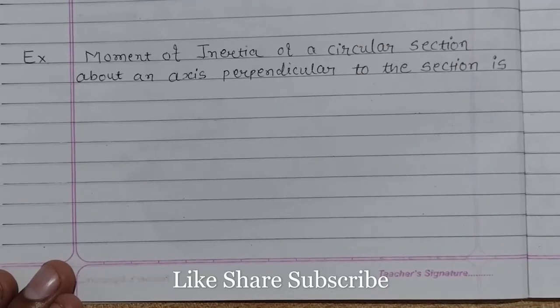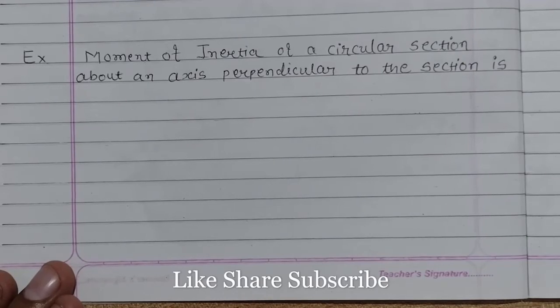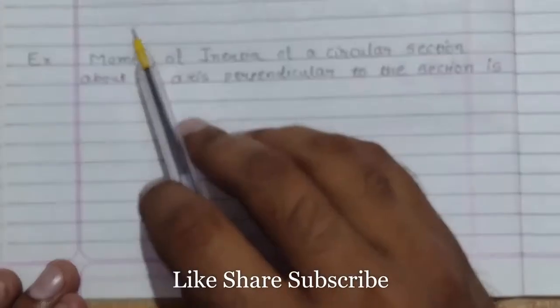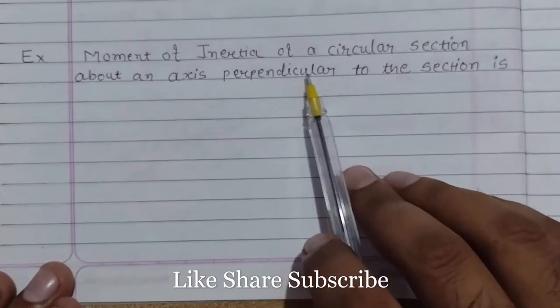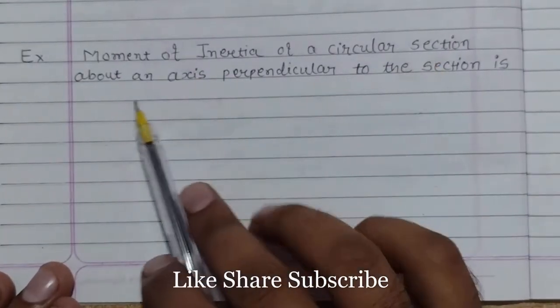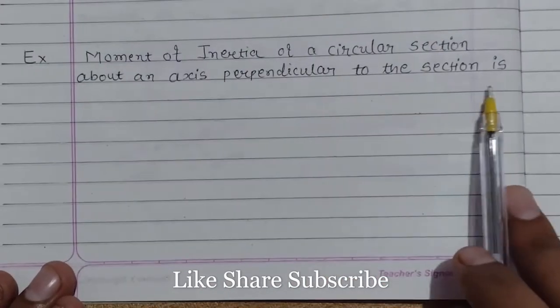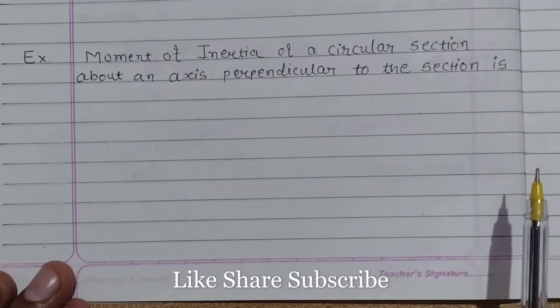So let's solve this problem. The problem statement says: moment of inertia of circular section about an axis perpendicular to the section is... So we have to find the moment of inertia of a circular section.